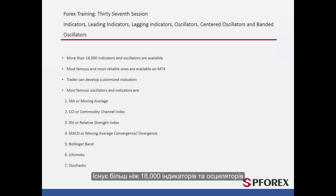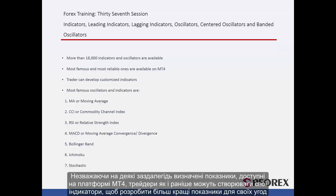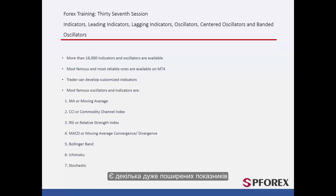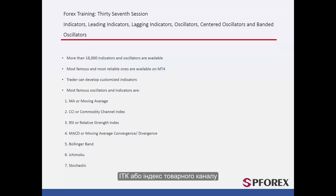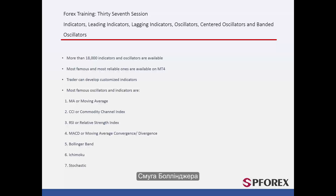There are more than 18,000 indicators and oscillators. Despite some predefined indicators available on the MetaTrader 4 platform, traders can still create customized indicators to develop better indicators for their trades. There are some widespread indicators as follows: MA or Moving Average, CCI or Commodity Channel Index, RSI or Relative Strength Index, MACD or Moving Average Convergence-Divergence, Bollinger Band, and Ichimoku. These are all accessible on both MetaTrader 4 and MetaTrader 5 platforms.